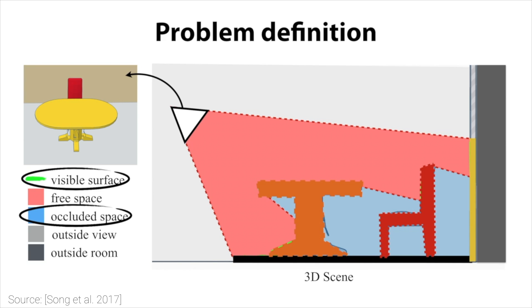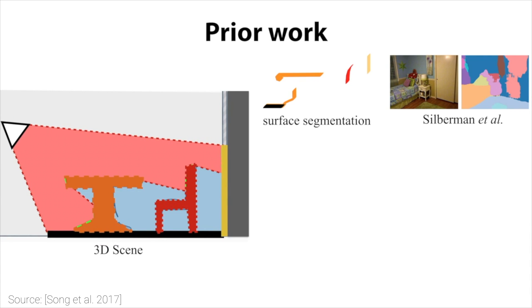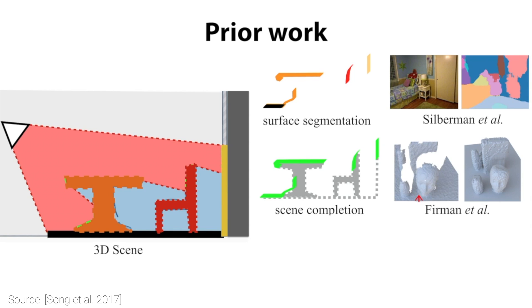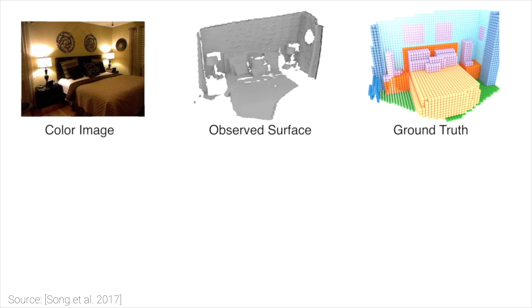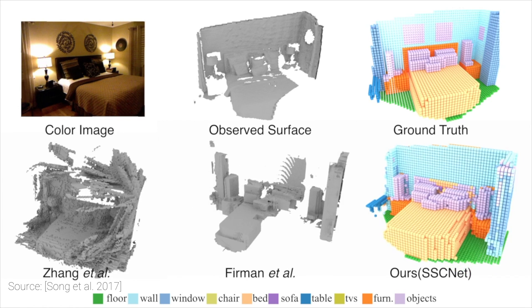The scene completion part means that from this highly incomplete depth information, the algorithm reconstructs the geometry for the entirety of the room, even parts that are completely missing from our images or things that are occluded. The output is what computer graphics researchers like to call a volumetric representation, or a voxel array, which is essentially a large collection of tiny Lego pieces that build up the scene.